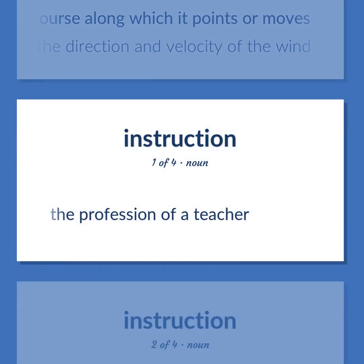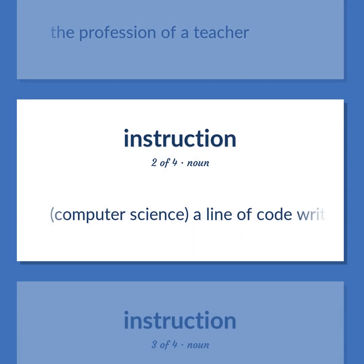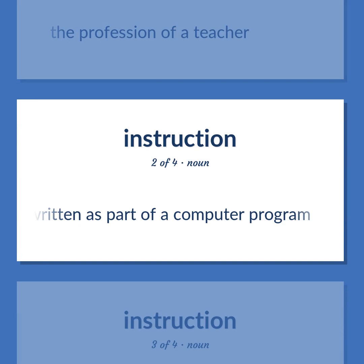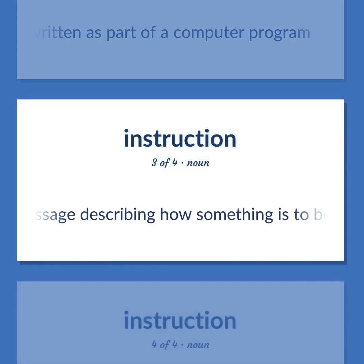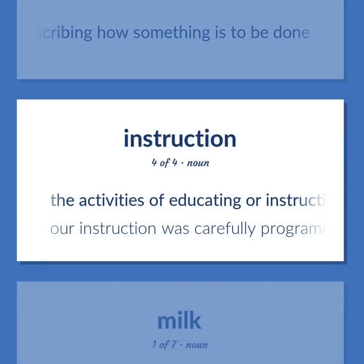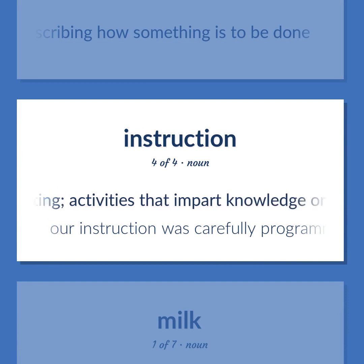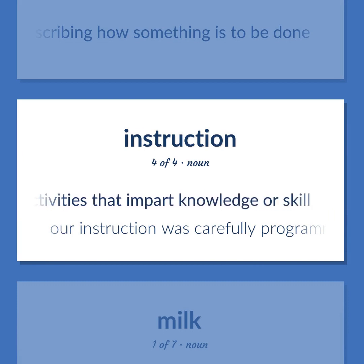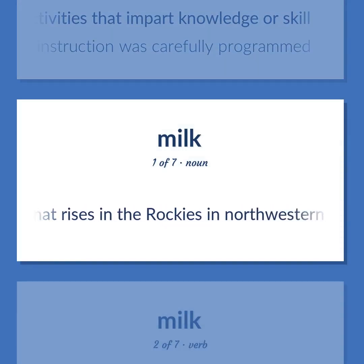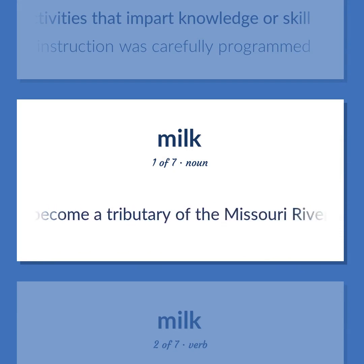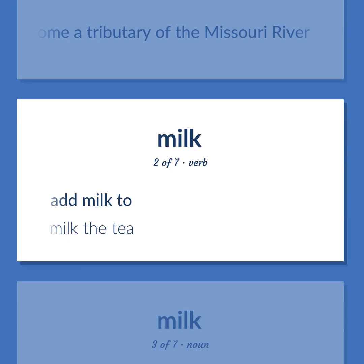Instruction: the profession of a teacher. Computer science: a line of code written as part of a computer program. A message describing how something is to be done. The activities of educating or instructing; activities that impart knowledge or skill — our instruction was carefully programmed. A river that rises in the Rockies in northwestern Montana and flows eastward to become a tributary of the Missouri River. Milk: add milk to — milk the tea.